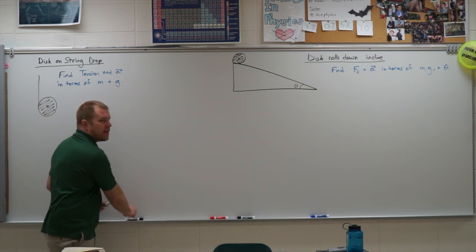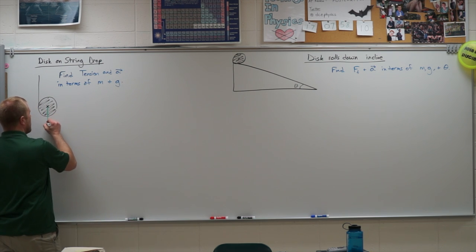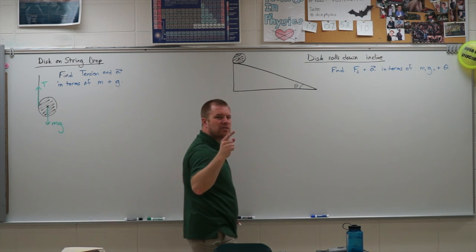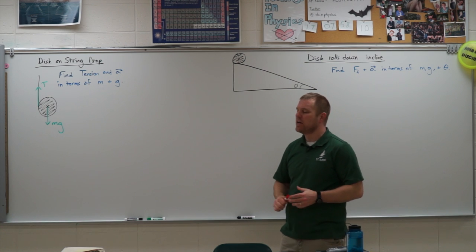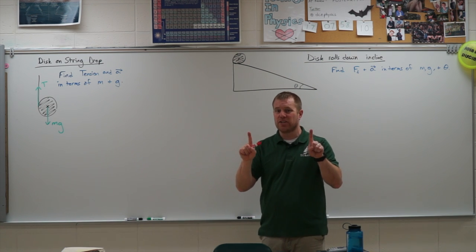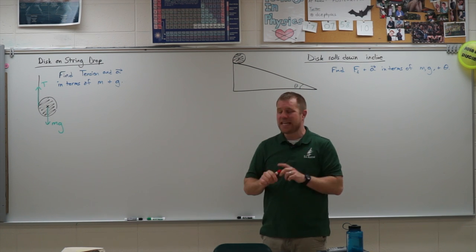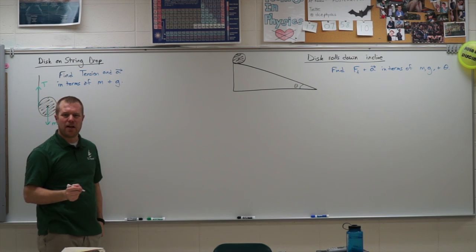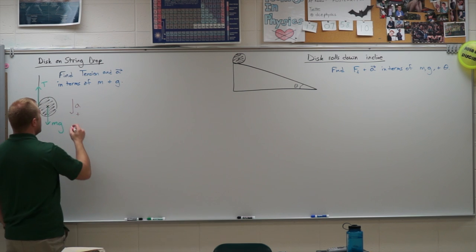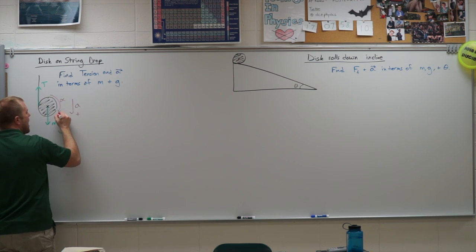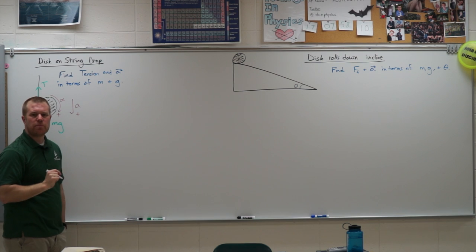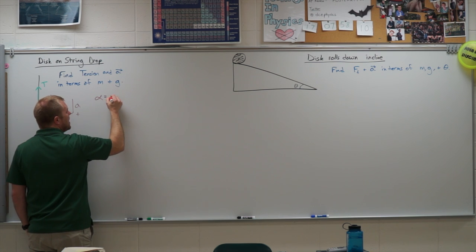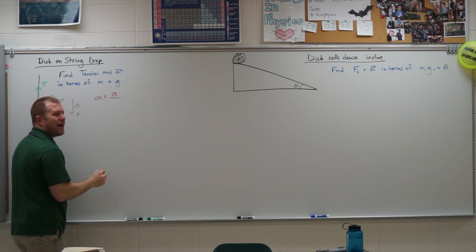Let's start with the first problem. I'm going to draw my forces and set up my free body diagram. I have mg pulling it down and tension pulling it up. Because this object is both angularly accelerating and linearly accelerating, we need to set up both those accelerations as positive and then link them together. This object is accelerating down, so down is going to be my positive direction. It is also angularly accelerating, and I need to make sure both of those are positive so I can link them together.